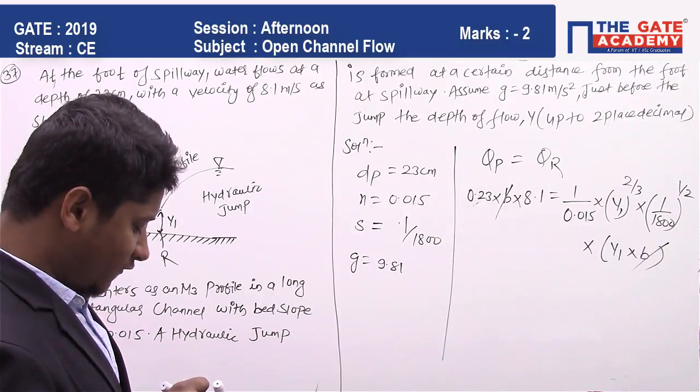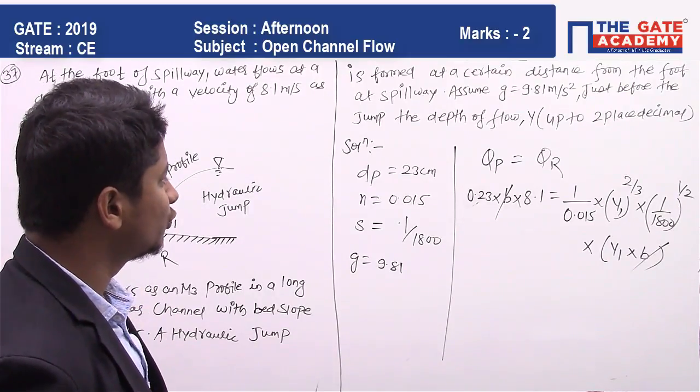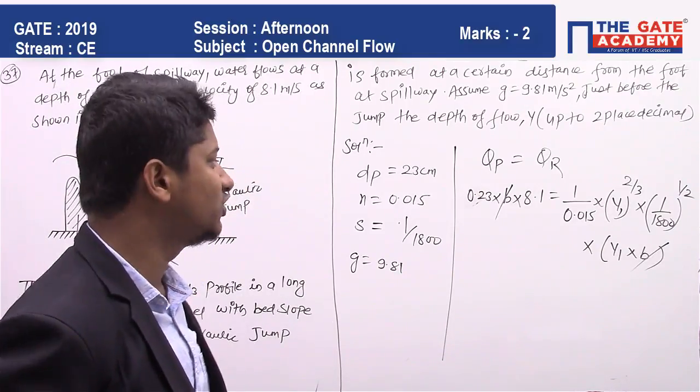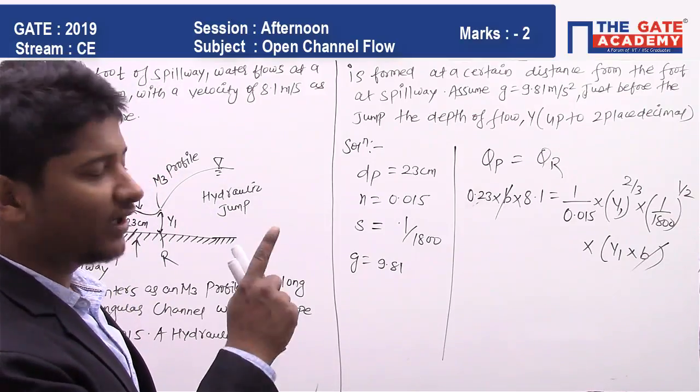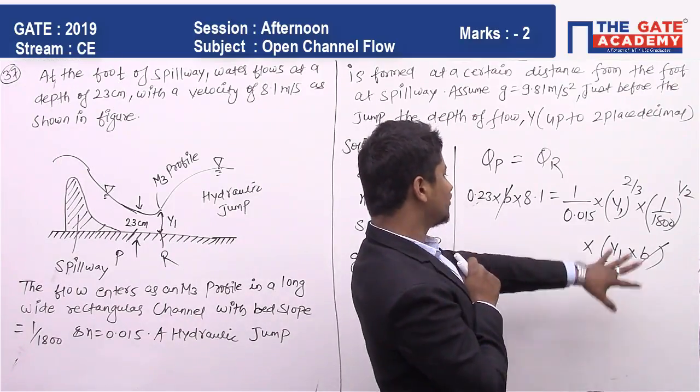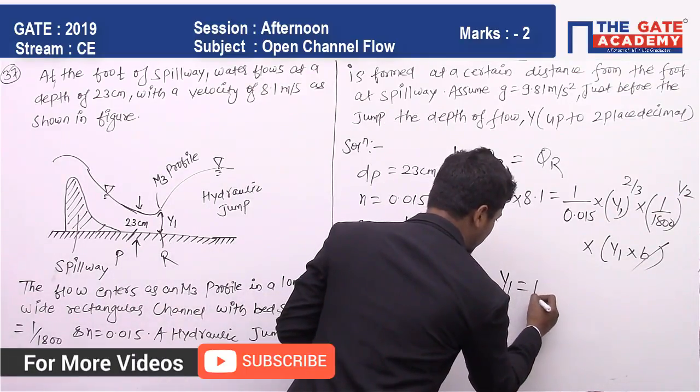So 0.23 × 8.1 = (1/0.015) × Y1^(2/3) × √(1/1800) × Y1. If you solve this part, the value you are getting for Y1 is 1.107.